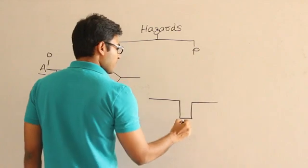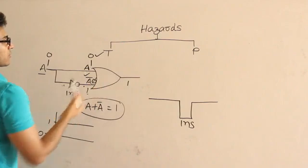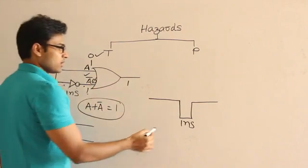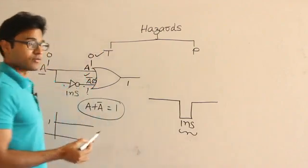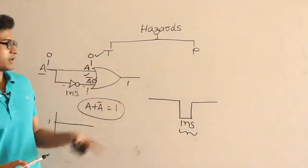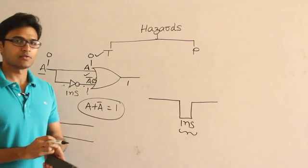For how much time? 1 nanosecond. And after that immediately, this 0 will become 1 and obviously we are going to get 1 here anyway. But then only for a small amount of time, which is equal to the propagation delay of this gate, we are going to get some hitch there. So that is called as temporary hazard.